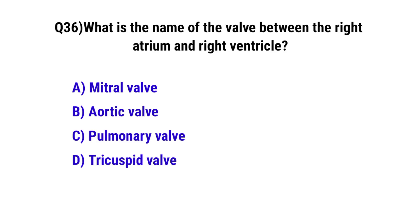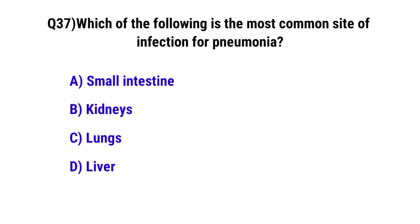Question No. 36: What is the name of the valve between the right atrium and right ventricle? The correct option is D: tricuspid valve. Question No. 37: The most common site of infection for pneumonia is — the correct option is C: lungs.